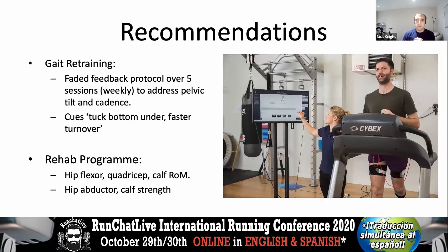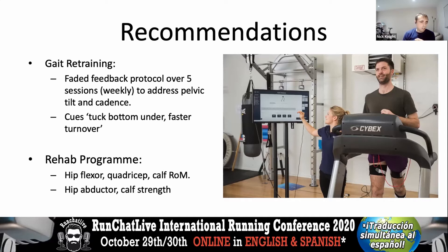The intervention was a gait retraining process — feedback-based, working out which cues worked for this individual — over five weekly sessions, addressing proximal control. The cue that worked for him was faster turnover to increase cadence, and tucking the bottom under to get a slightly more upright posture. This was combined with a rehab program focusing on strengthening — as always, gait analysis is always paired with a rehab program.